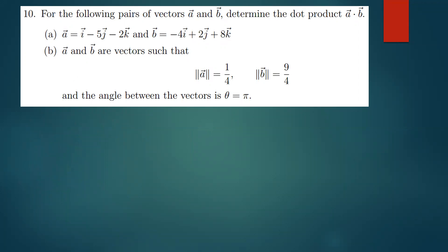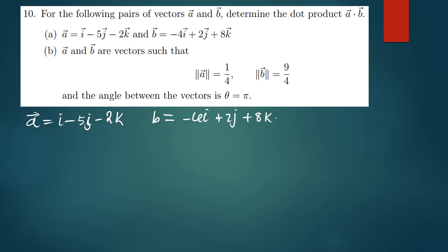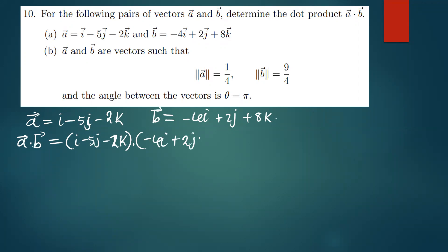So for instance, the first vectors we have: vector a is i minus 5j minus 2k, and vector b is negative 4i plus 2j plus 8k. We've been asked to find a·b, which means we're multiplying a = (i − 5j − 2k) dotted with b = (−4i + 2j + 8k).